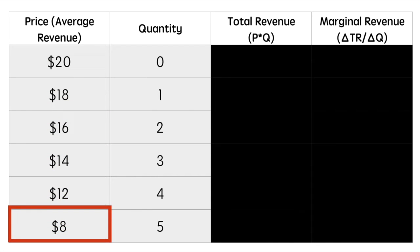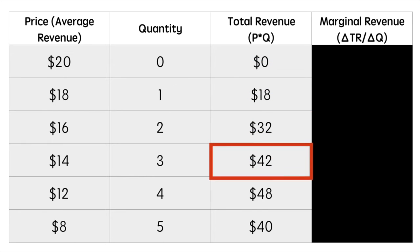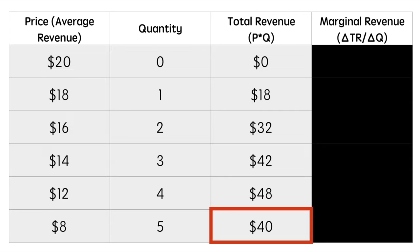Total revenue is a simple multiplication of price and quantity. This gives us $0 at a price of $20 and total revenue of $40 when the price is $8. If you have a careful eye, you've noticed that total revenue first increased then decreased at quantity 5. This is helpful when calculating marginal revenue.